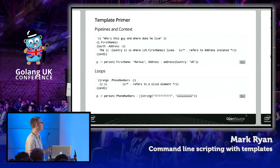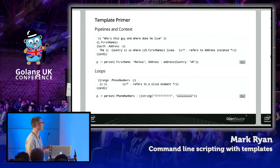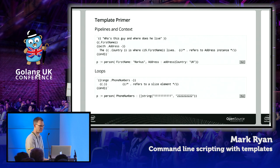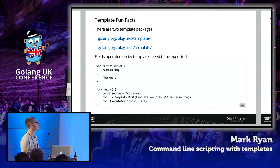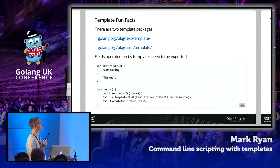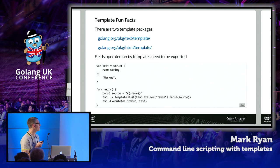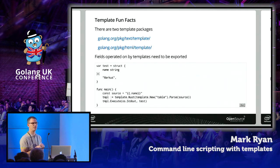Another directive that affects the context is range. Range can be used to iterate through a collection — a slice, map, or array. On each iteration, the dot operator is set to the current element in the collection. There are actually two template packages: text/template and html/template. Text/template is for generating text documents, and html/template generates HTML documents which are safe from HTML injection attacks, as we have seen. The two packages have identical APIs, so be careful when using them — particularly with tools like goimports.